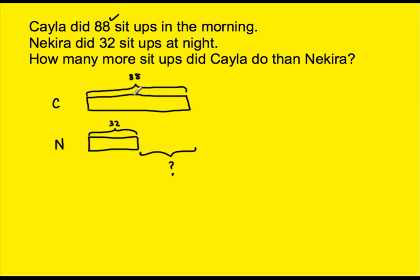This is what they have in common. I draw a dotted line here just to show where Nakira ends. Up until this point it's 32. I'm trying to figure out how many more sit-ups Kyla did — that's the part I'm trying to figure out. If you think of a number bond, 88 would be the total, 32 would be one part, and the missing amount is the other part. So because I'm solving a missing part problem, this is going to be subtraction — or a missing addend problem.